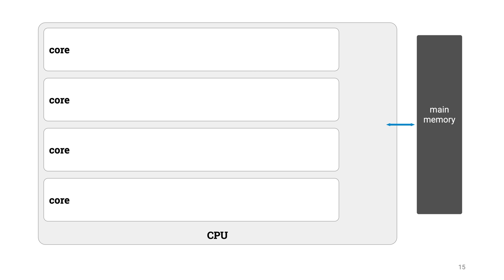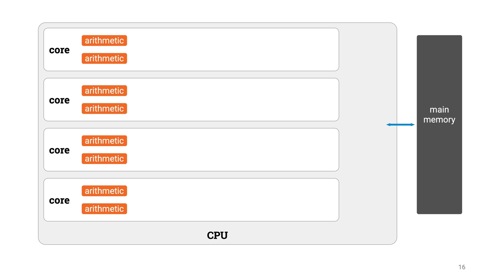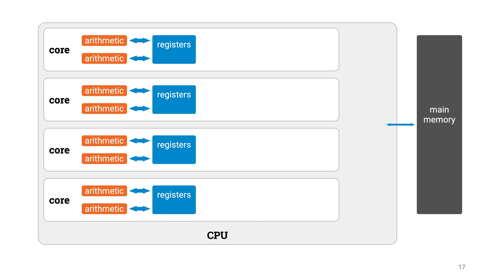As we have already mentioned, inside the CPU there are multiple CPU cores. And these CPU cores are actually those units that contain all machinery that can actually perform arithmetic operations, like additions, multiplications, calculating minimums, and so on.